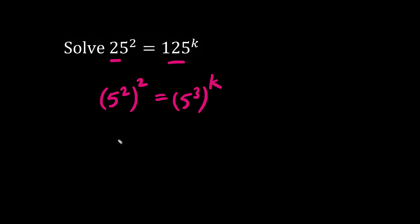Exponent, bracket, exponent, we multiply. So we have 5 to the 3k. The bases are the same, and so are the exponents.